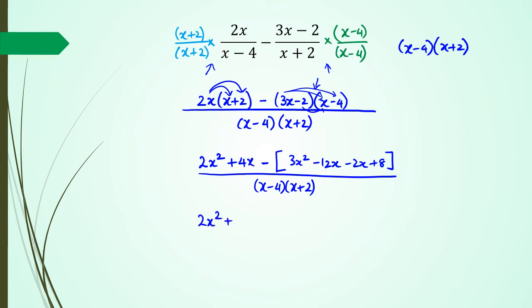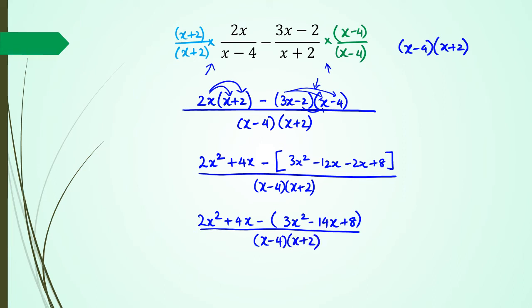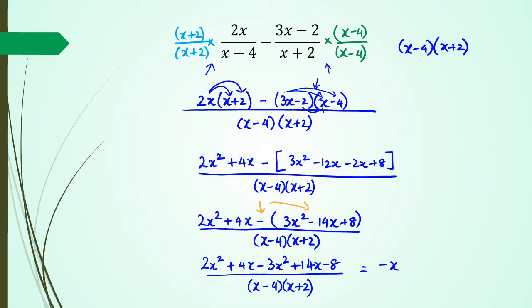So I'll simplify that bracket first: 3x squared minus 14x plus 8. Now I need to realize that this minus sign is going to affect all the signs in that bracket, so I end up with 2x squared plus 4x minus 3x squared plus 14x minus 8, all divided by (x minus 4)(x plus 2). Simplifying: negative x squared plus 18x minus 8, divided by (x minus 4)(x plus 2). That's my final answer. You could have done cross multiplication, but you'd still have to do all the full working.